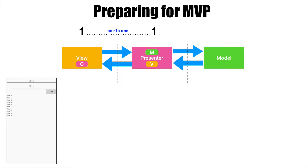Initially, when the screen gets loaded, you basically want to show all to-dos. And then, when the user clicks on the add button, you want to add a new item to the list view — that is, basically update the existing view. Or, if something goes wrong, you probably want to show an appropriate error. Another feature is, if you click on the item in the list view, you want to navigate to another screen.